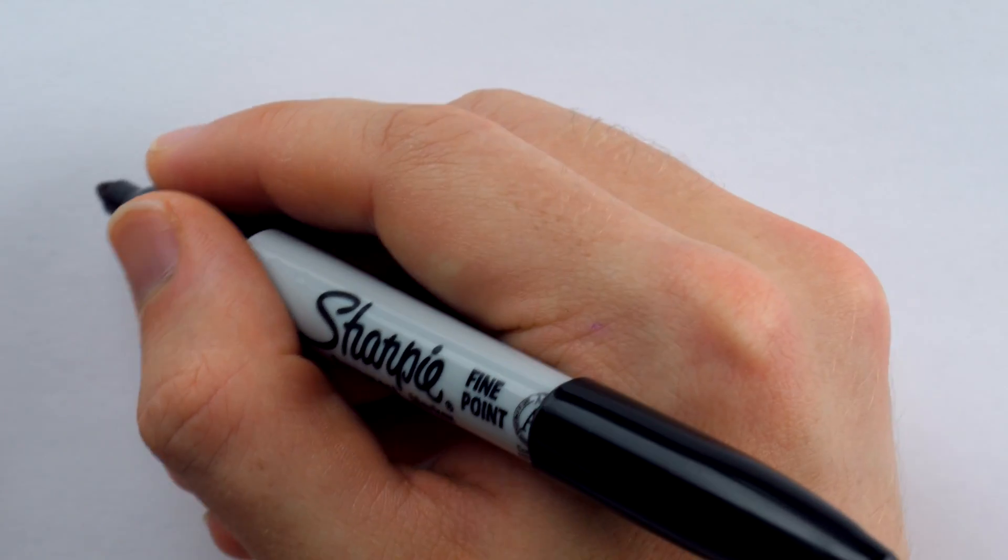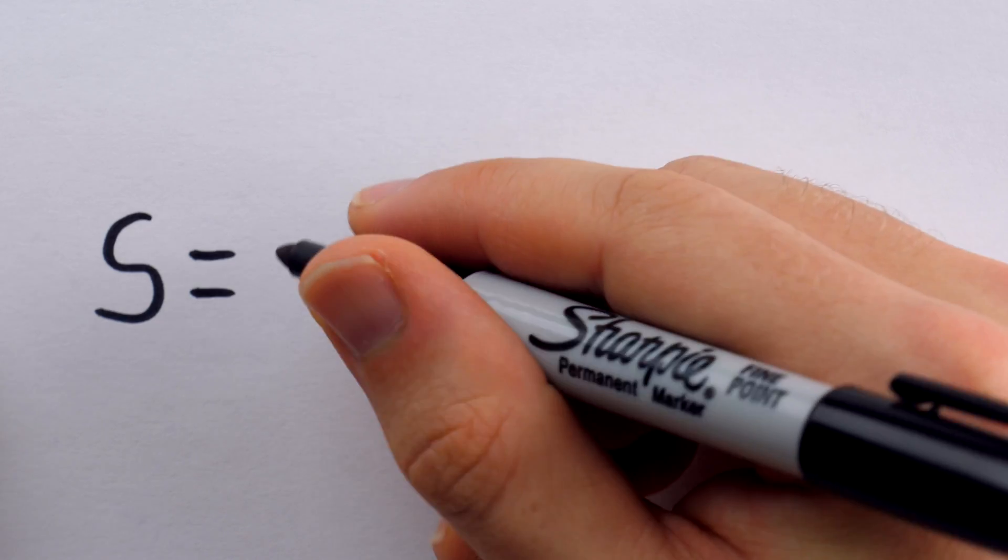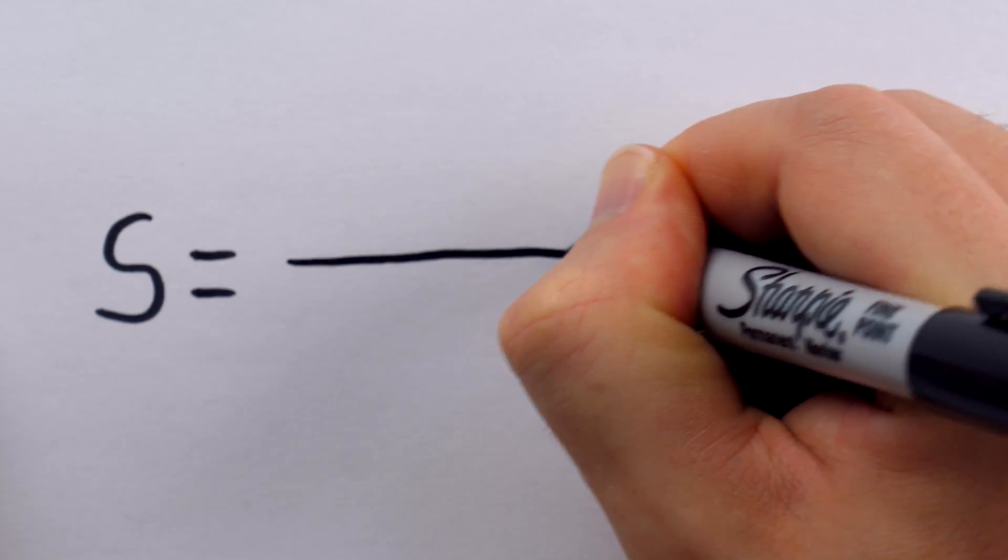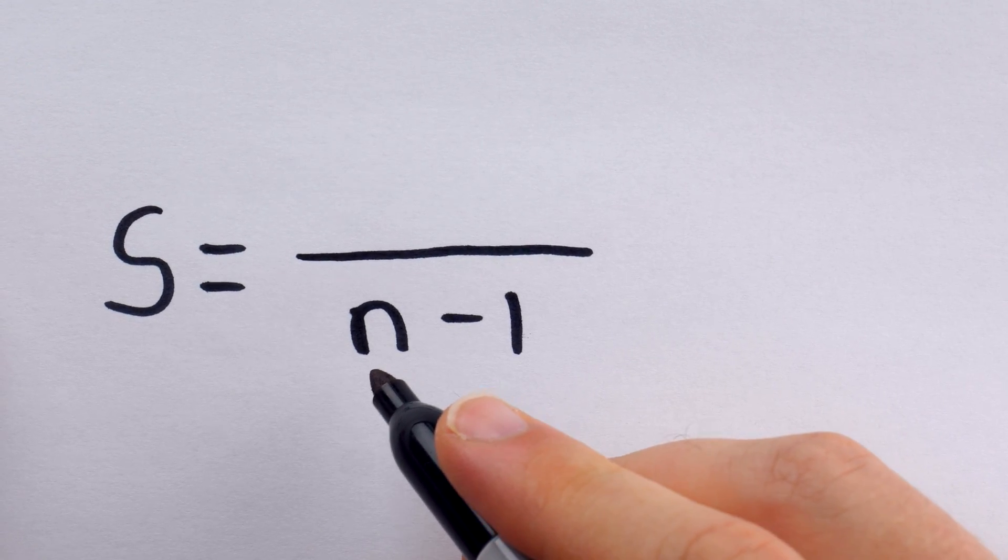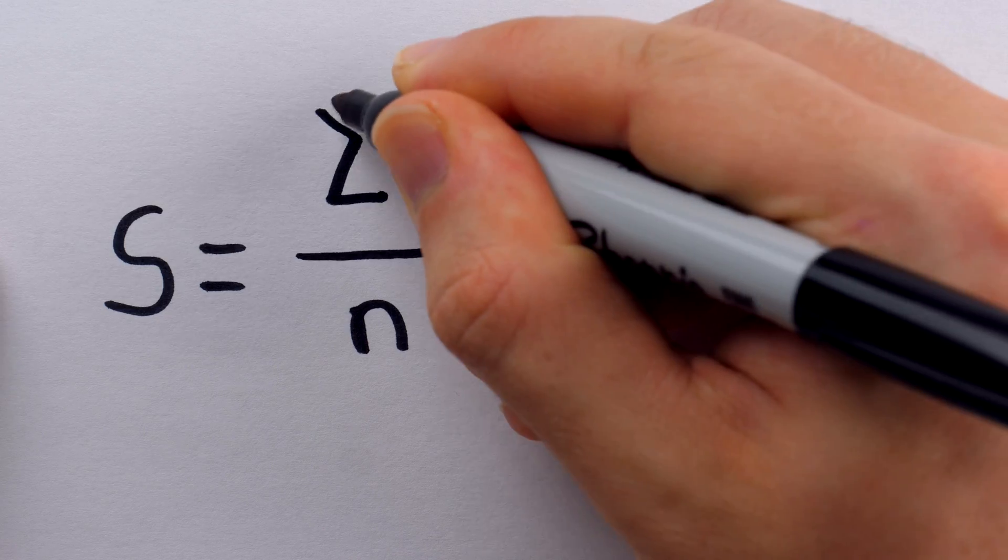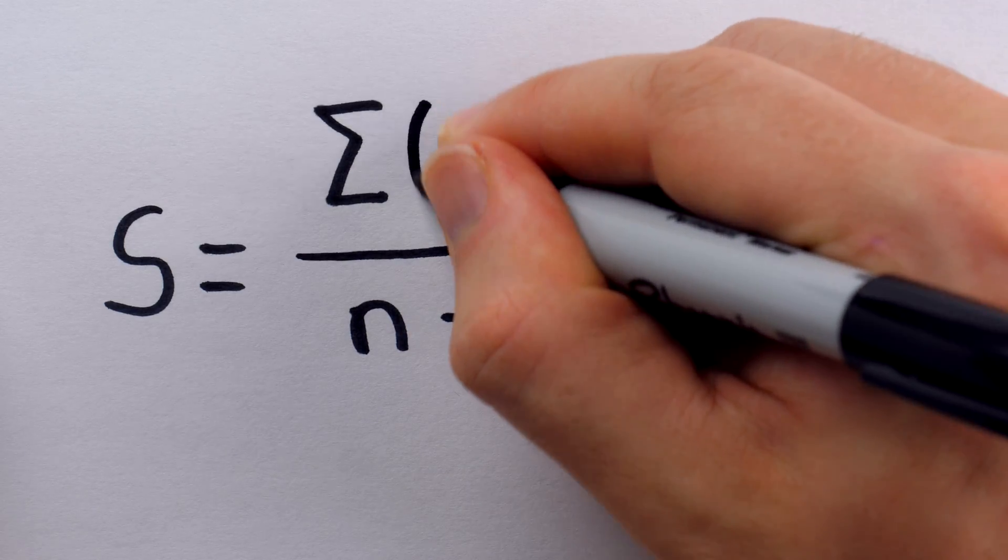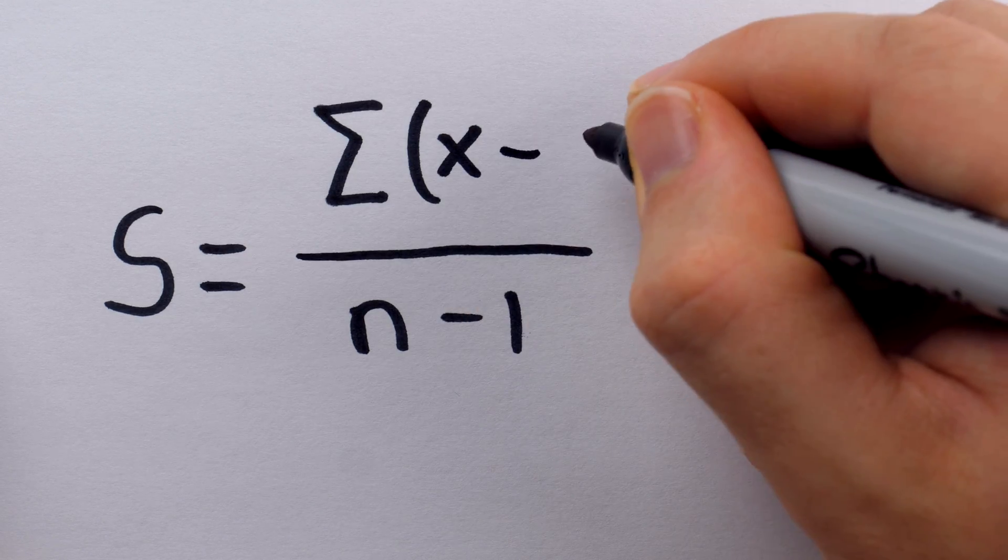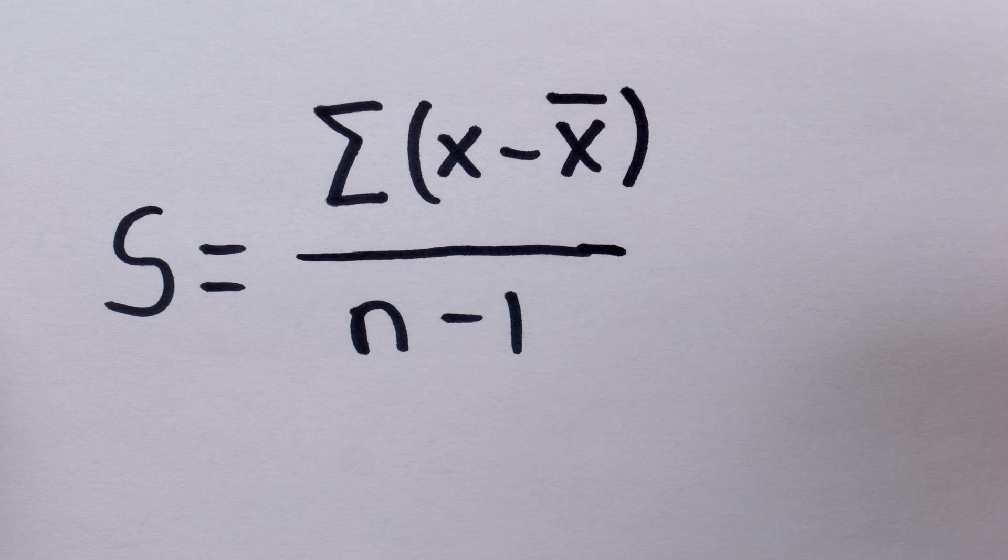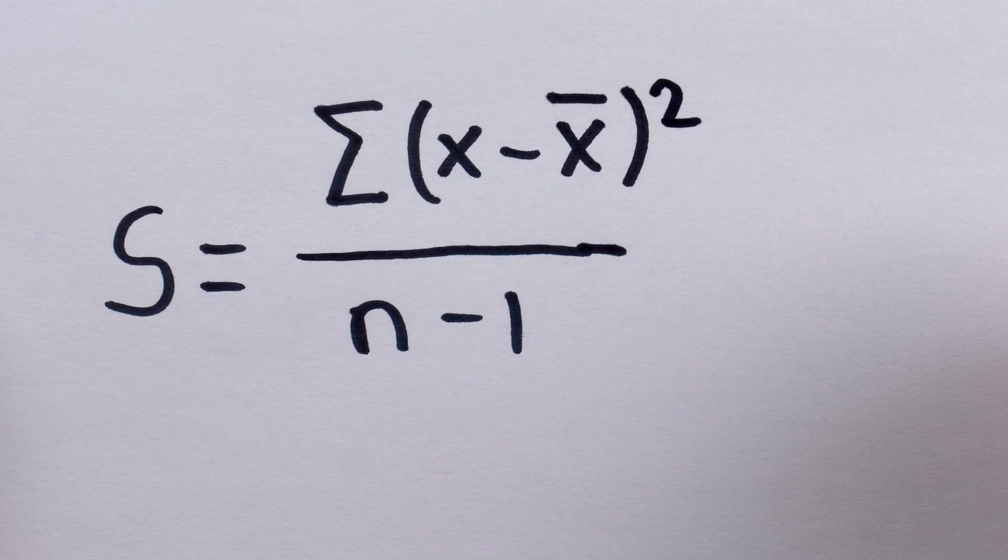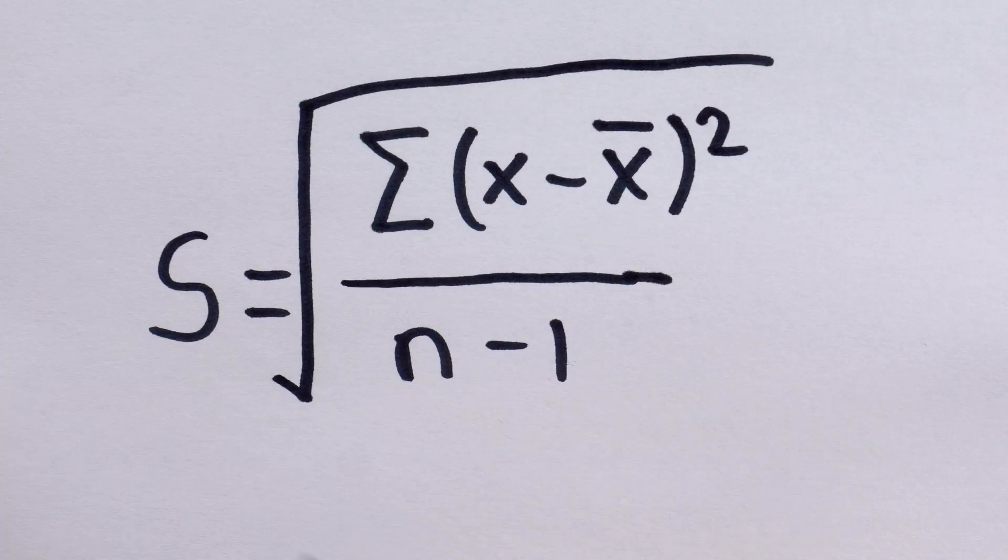One of the classic measures of spread is the standard deviation, which for a sample of data, we represent with an S. And it is calculated like this. We have a fraction. In the denominator, it is n minus 1, where n is the number of data points that we have. And in the numerator, we add up a bunch of stuff. That's what the sigma means. You're adding up a bunch of stuff. What we're adding up is each data point, represented by x, minus the mean of the data set, which is represented by x bar. And that gets squared. And then we also have to take the square root of this. This is the standard deviation.